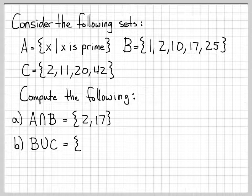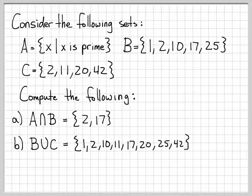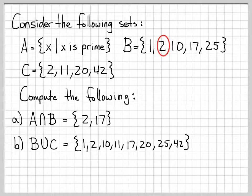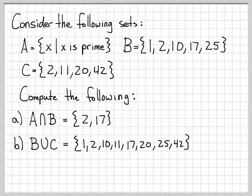Let's compute B union C. When we union two sets, we construct a new set that consists of all the elements that are in either of the sets — everything in B or in C. So we write down: 1, 2, 10, 11, 17, 20, 25, and 42. You'll notice that 2 appears in both B and C, but when we write down the set we only write it one time. That is the definition of union.